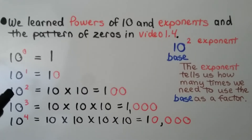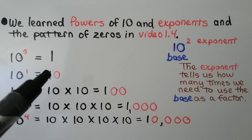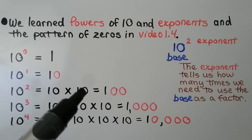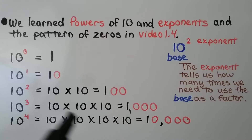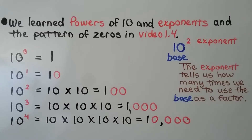It's also telling us how many factors of 10 we have. We have one factor of 10, so it's just 10. We have two factors of 10 — 10 times 10 — which is equal to 100. We have three factors of 10, so we're going to have three zeros next to the 1: 1,000. We have four factors of 10, so we're going to have a 1 with four zeros: 10,000. See the pattern?